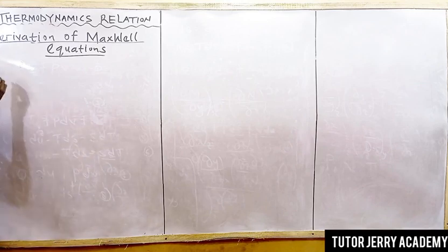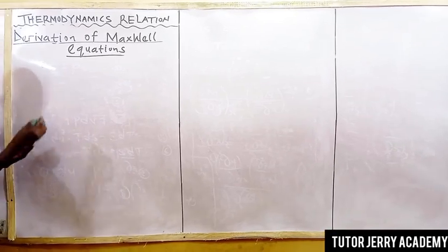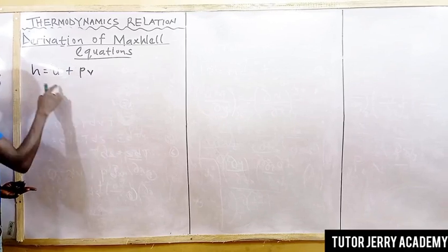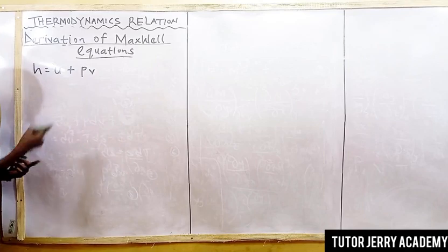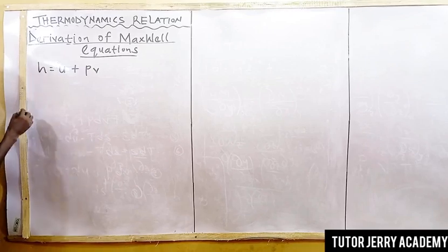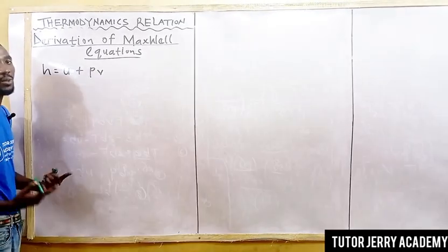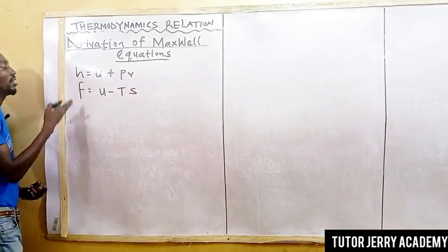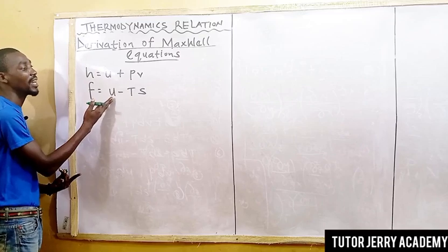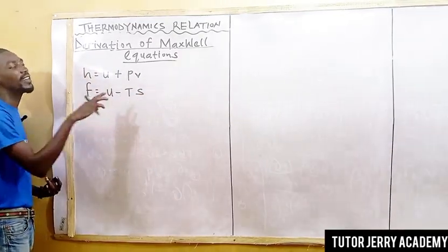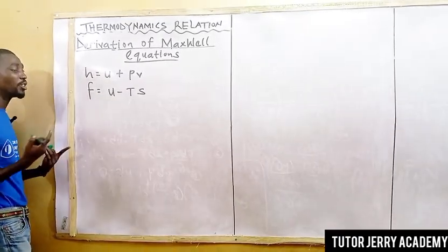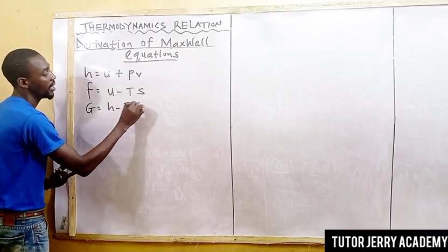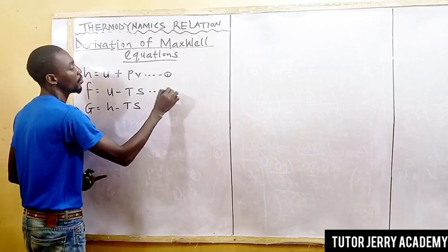The first thing is enthalpy, denoted with H. So H equals U plus PV, where U is internal energy, P is pressure, and V is volume. The next one is the Helmholtz function, denoted with F, so F equals U minus TS, where U is internal energy, T is temperature, and S is entropy. The Gibbs function is denoted with G and the formula is G equals H minus TS. Let's call these equation one, equation two, and equation three.